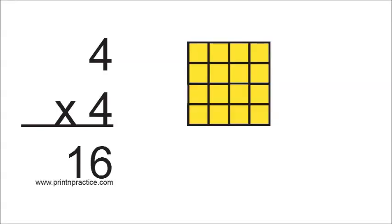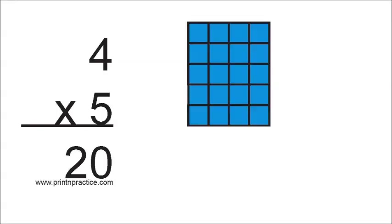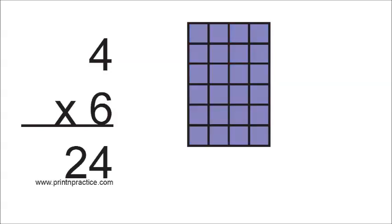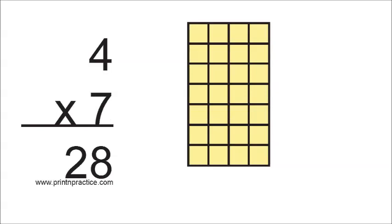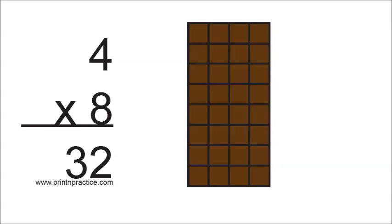Four times four are sixteen. Four times five are twenty. Four times six are twenty-four. Four times seven are twenty-eight.